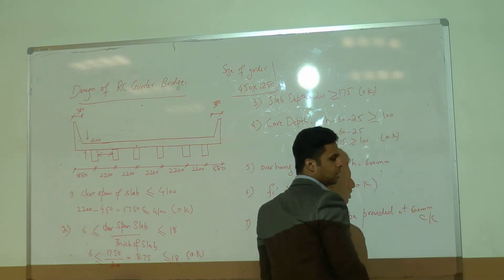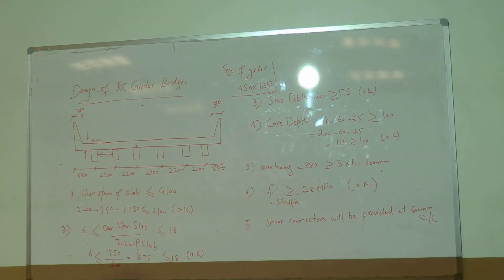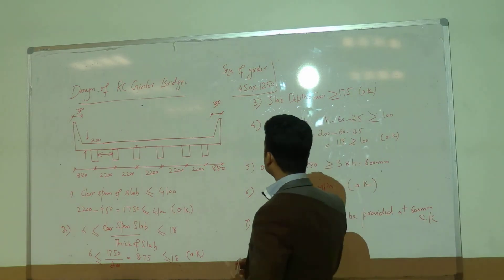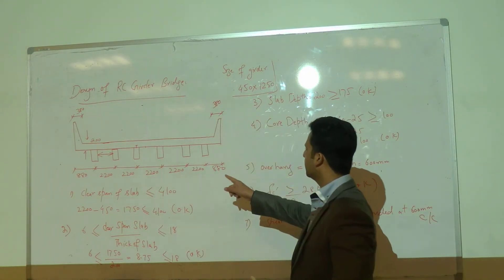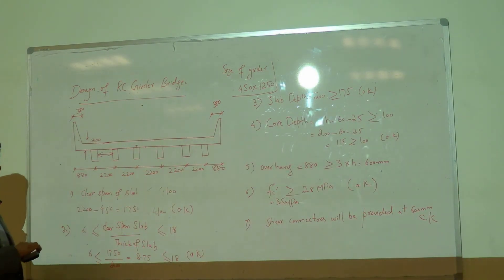So once all these conditions are satisfied, now you can find out the top and bottom reinforcement. And that reinforcement is 0.570 mm square per mm width of the slab.